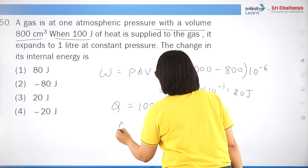Question 44: a particle is projected at 60° above horizontal at 10 m/s. Later, its velocity makes 30° above horizontal. Using conservation of horizontal velocity: v·cos30° = 10·cos60°. So v×(√3/2) = 10×(1/2) = 5, giving v = 10/√3 m/s. Correct answer is option 4.